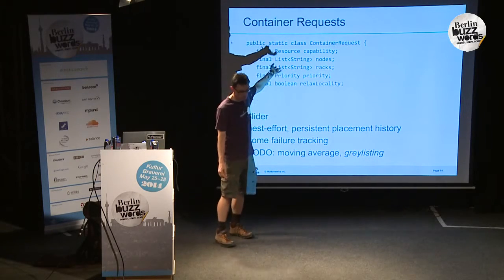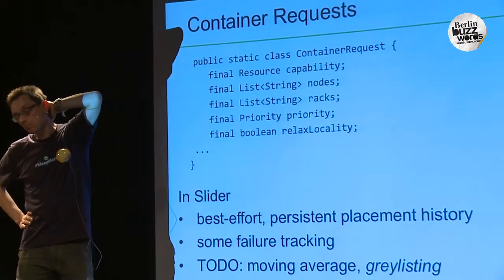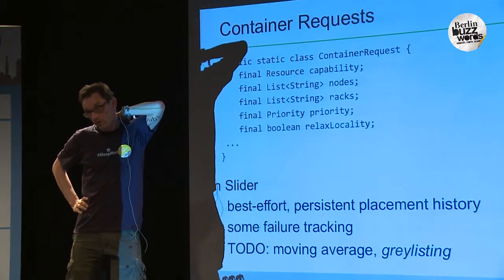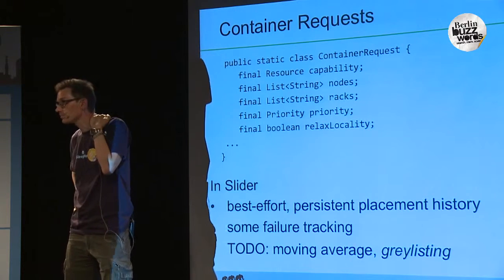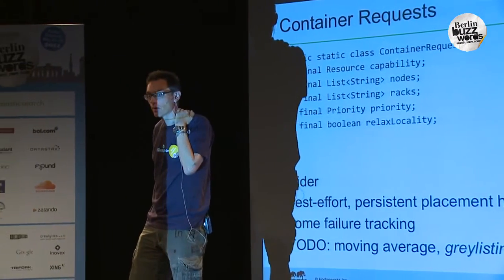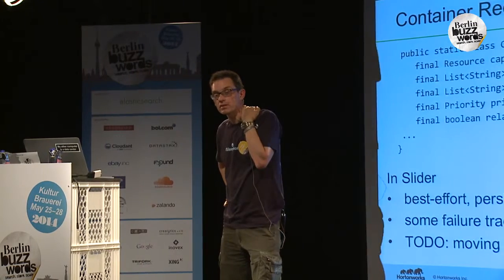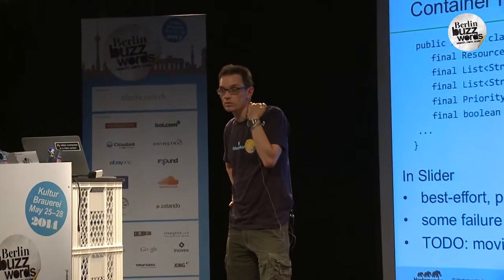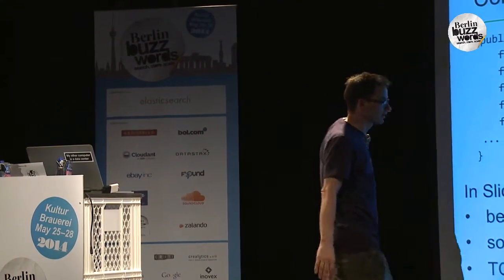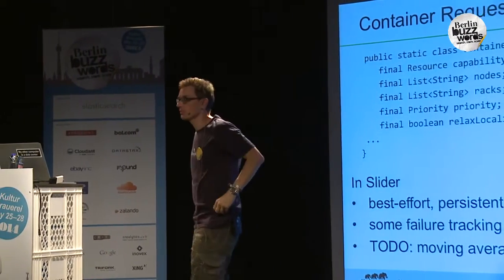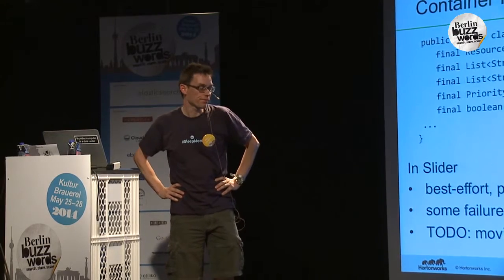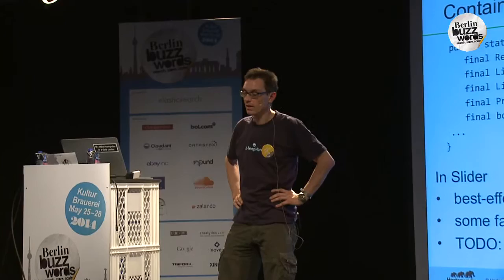When asking for containers, you specify requirements in terms of memory and CPU, and you also get to say where you want them. MapReduce looks at where the data is, checks where the HDFS blocks are, and says I want to run my code there. In the Slider project we do it completely differently — we just say I want something at random, but then we try to remember where it was so the next time your application comes up, it's back in the same place to reuse data. There's a flag for relax locality versus strict — strict means it must be on a specific node, but if that machine is busy you won't get a container, so generally relax is the only option that makes sense.